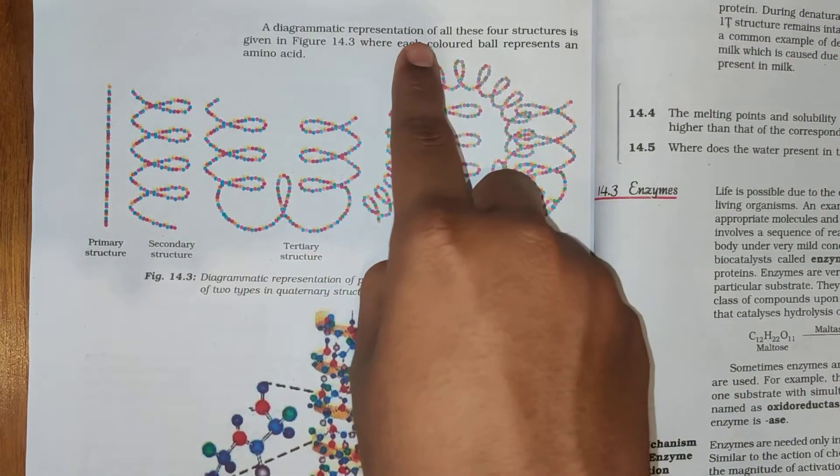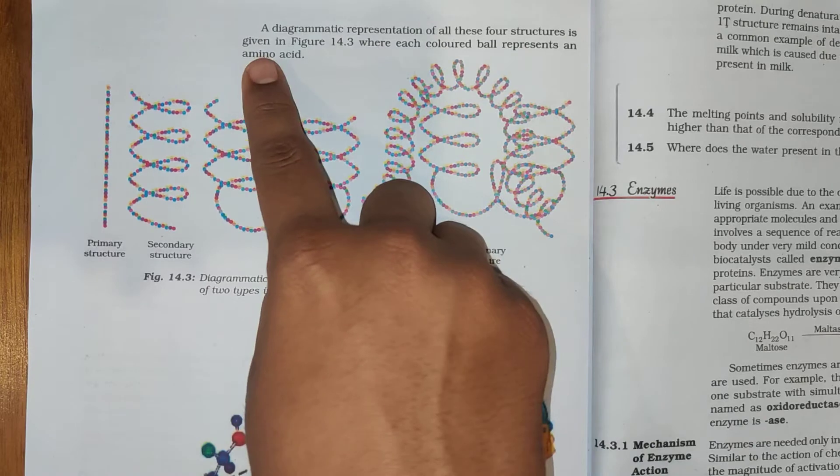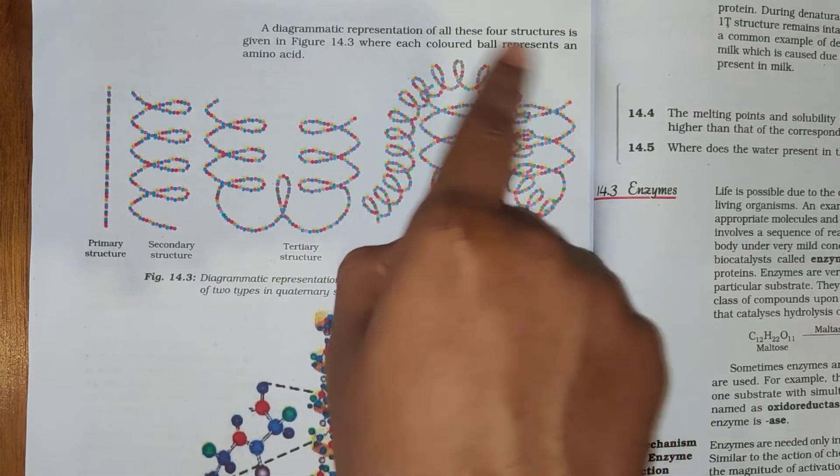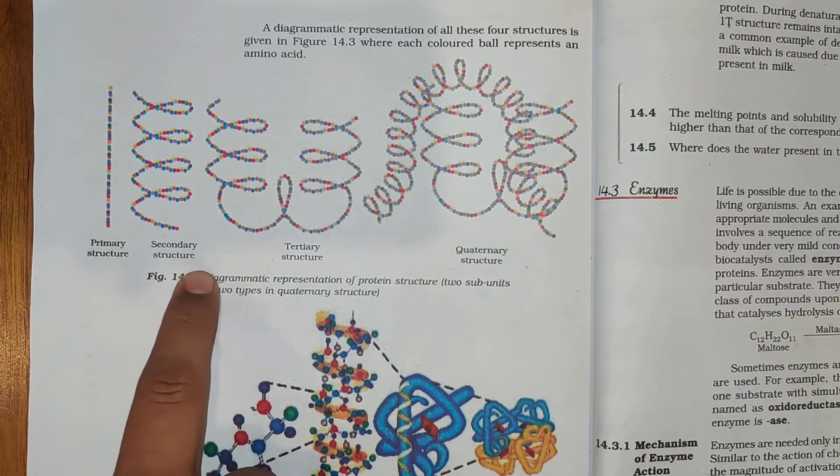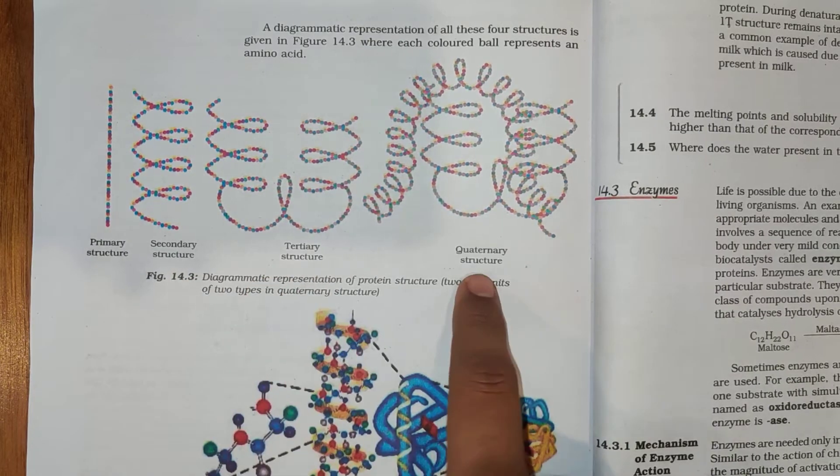A diagrammatic representation of all these four structures is given below where each colored ball represents an amino acid: Primary structure, secondary structure, tertiary structure and quaternary structure.